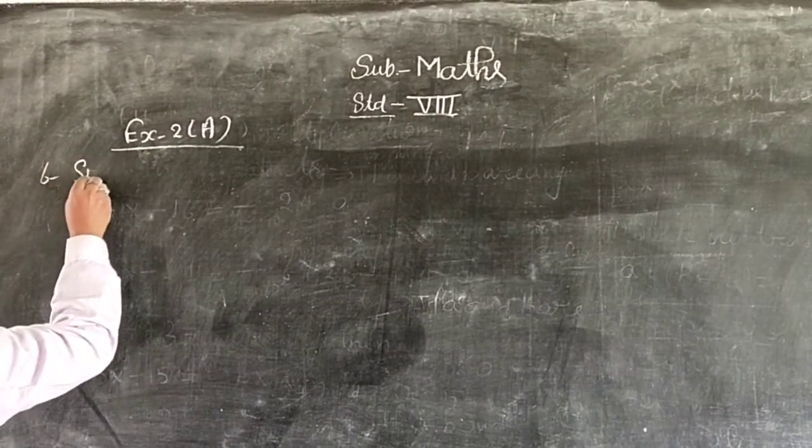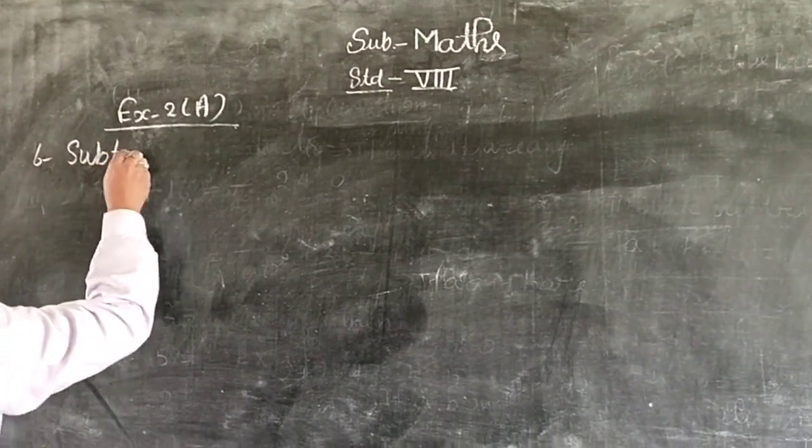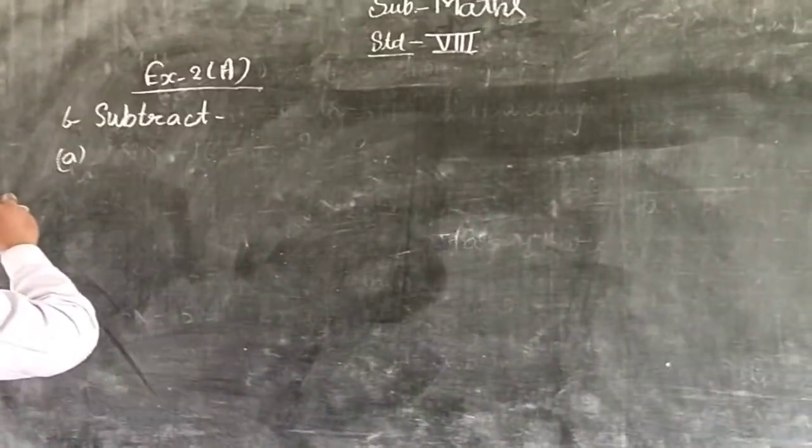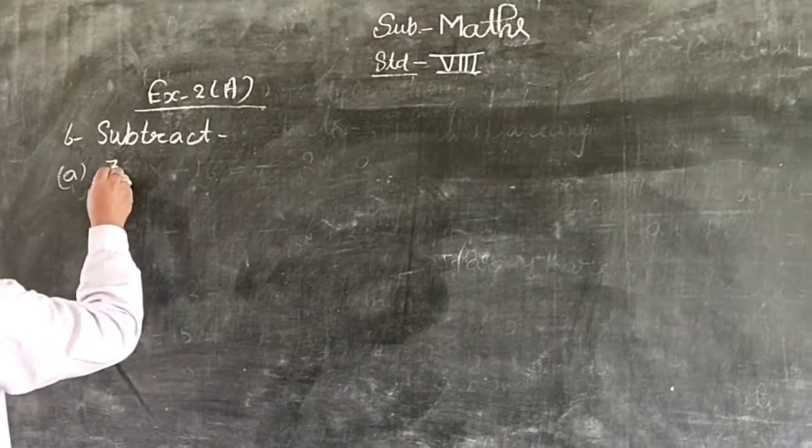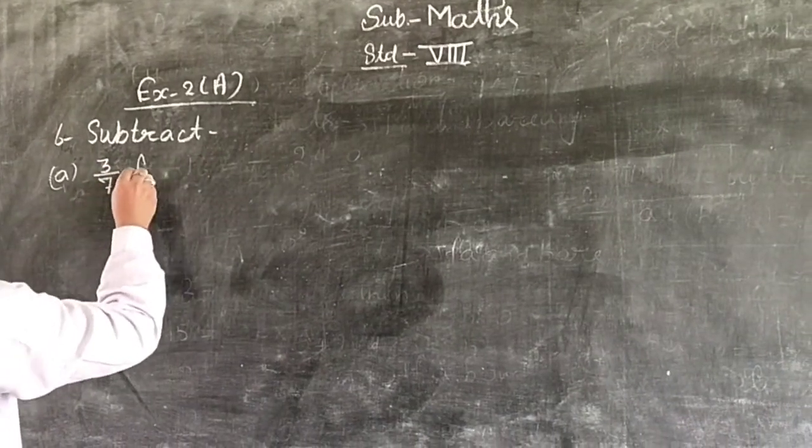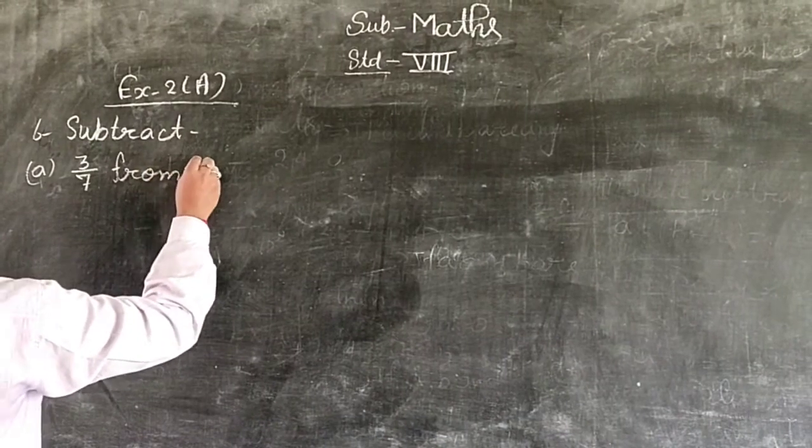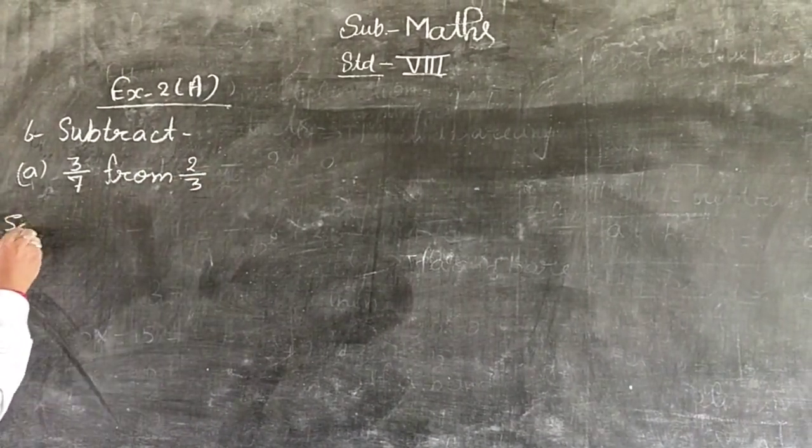Part A: Subtract 3 upon 7 from 2 upon 3. Now solve: 2 upon 3 minus 3 upon 7.